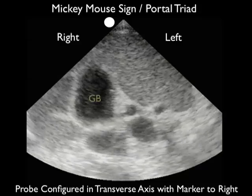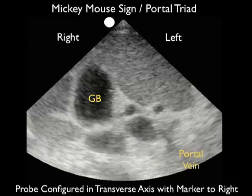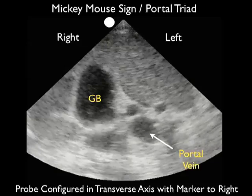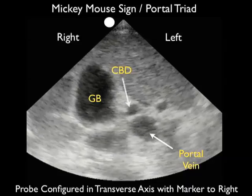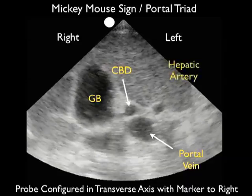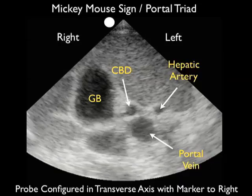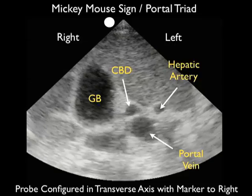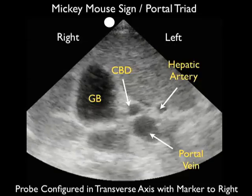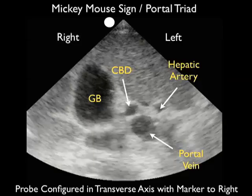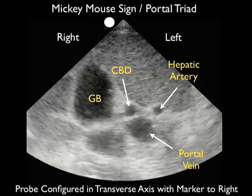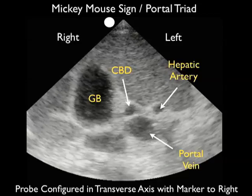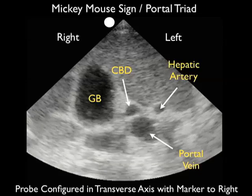Here's a video clip showing the sonographic appearance of the portal triad, which we refer to as the Mickey Mouse sign. We see the gallbladder over towards the left of the image and the portal triad making up the Mickey Mouse sign. The portal vein makes up Mickey's face, and the ears of Mickey — the common bile duct making up the left ear and the hepatic artery making up Mickey's right ear. This image is best obtained from a subcostal plane in a transverse axis with the probe marker over towards the patient's right side.